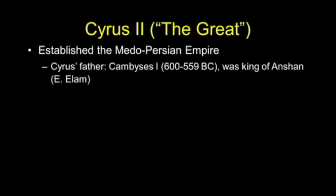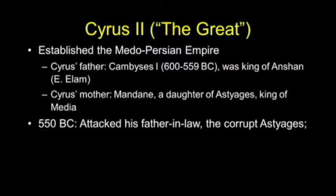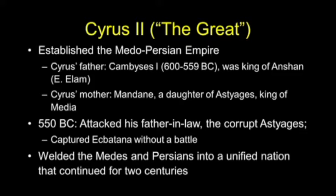His father was Cambyses I, king of Anshan, which is Elam. His mother was Mandane, daughter of Astyages, the king of Media. In 550 BC, he attacked his grandfather Astyages and captured Ecbatana, the capital, without a battle — which became his pattern. He welded the Medes and the Persians together. We know the Medes today as the Kurds, very much in the news, as they are split among Turkey, Iraq, and Iran. That unified empire survived for 200 years, stood off the Roman Empire for centuries.